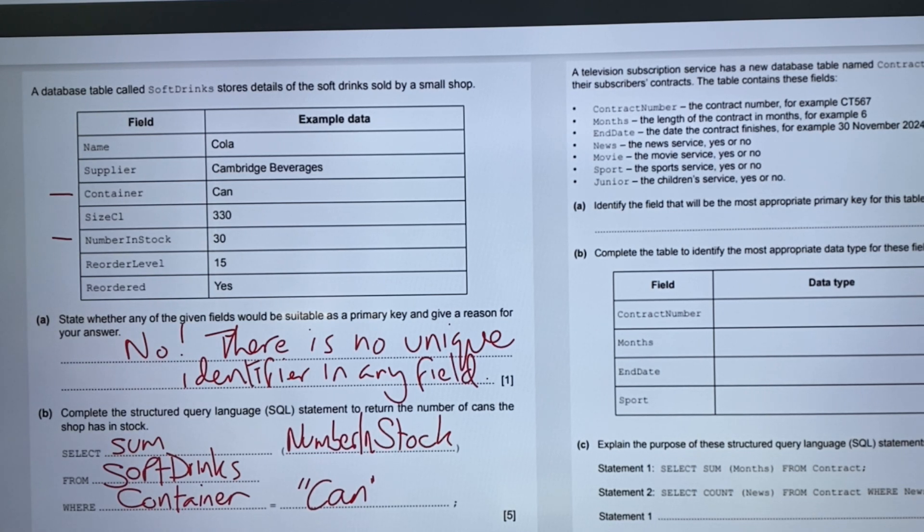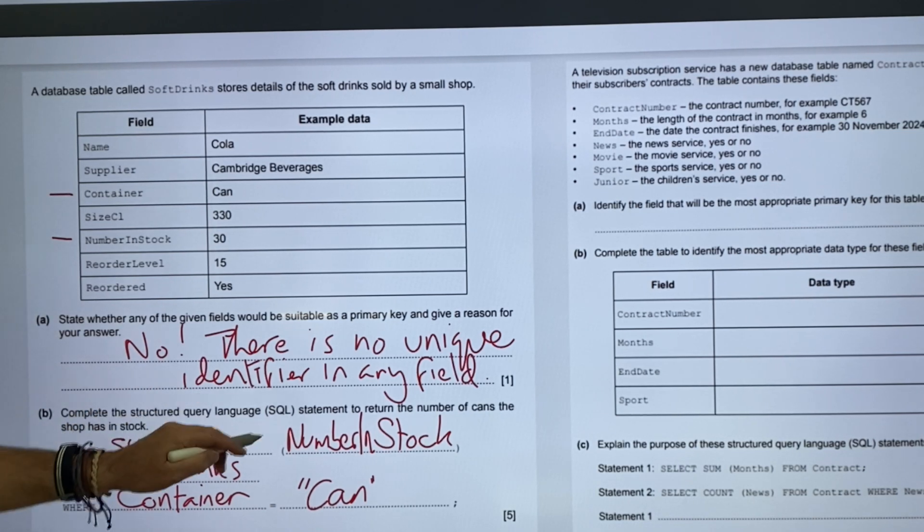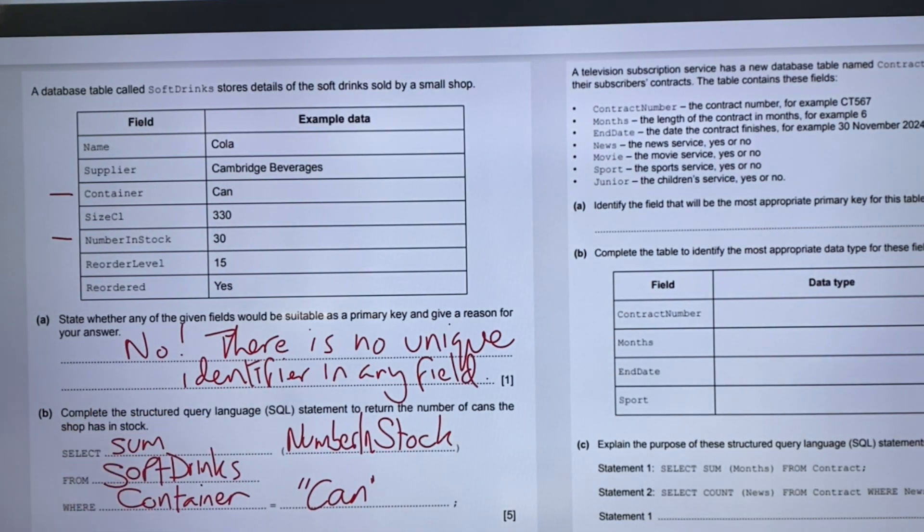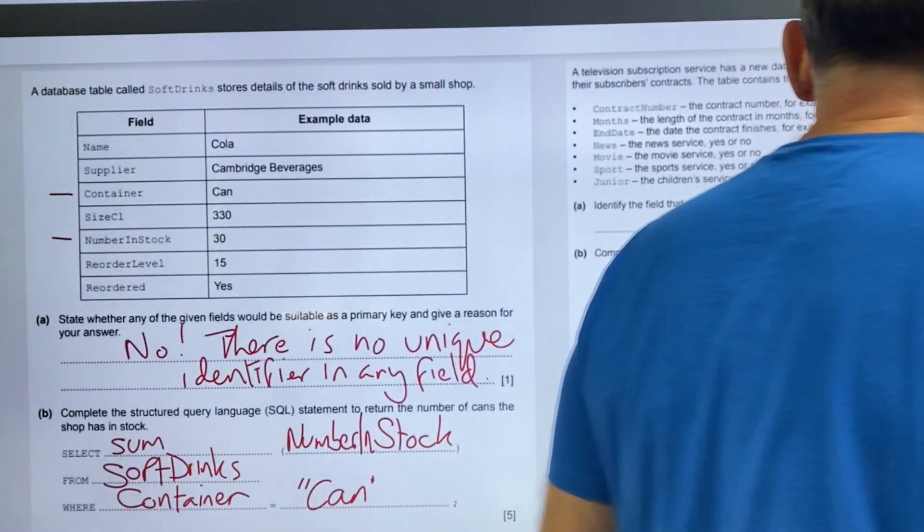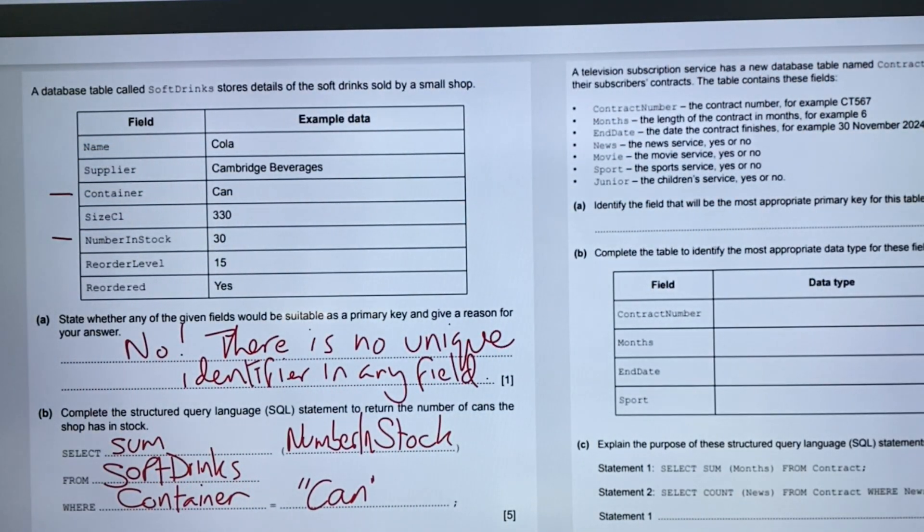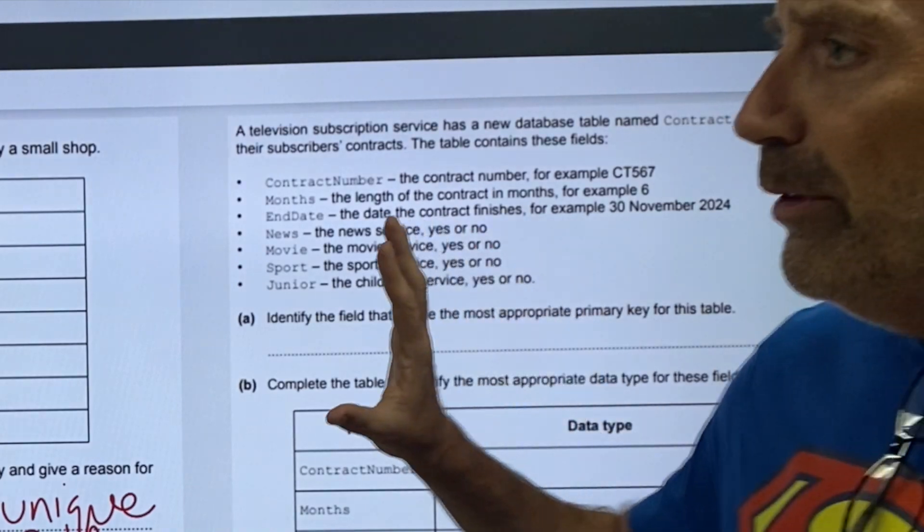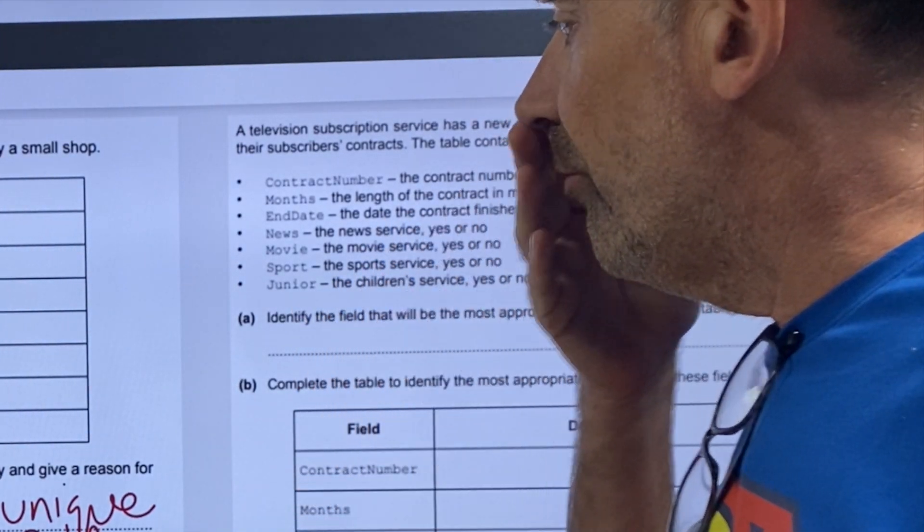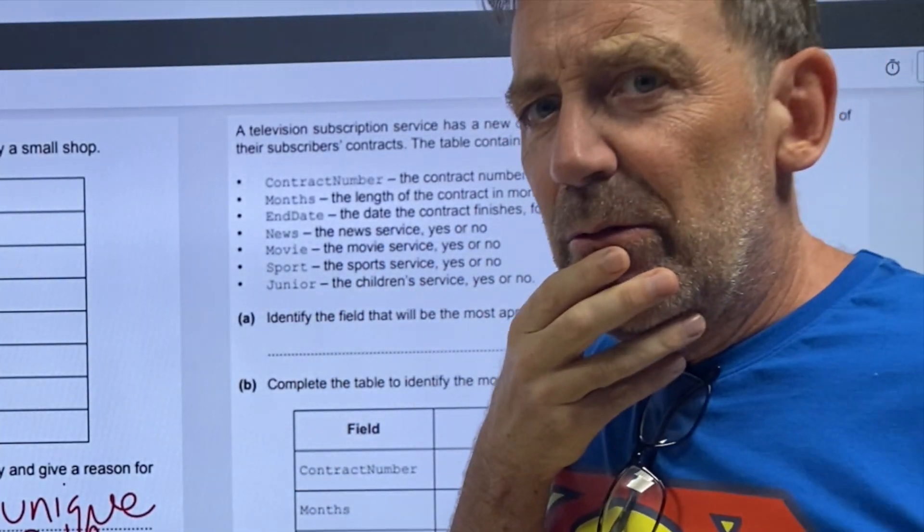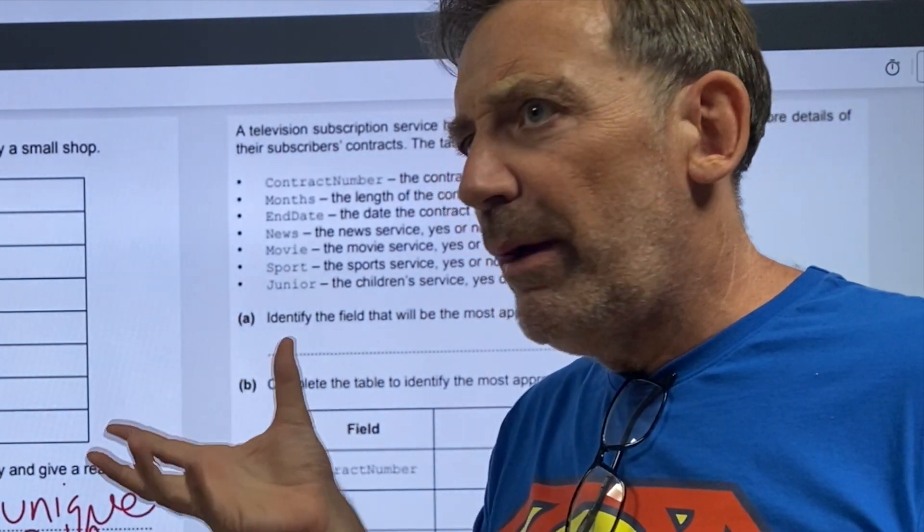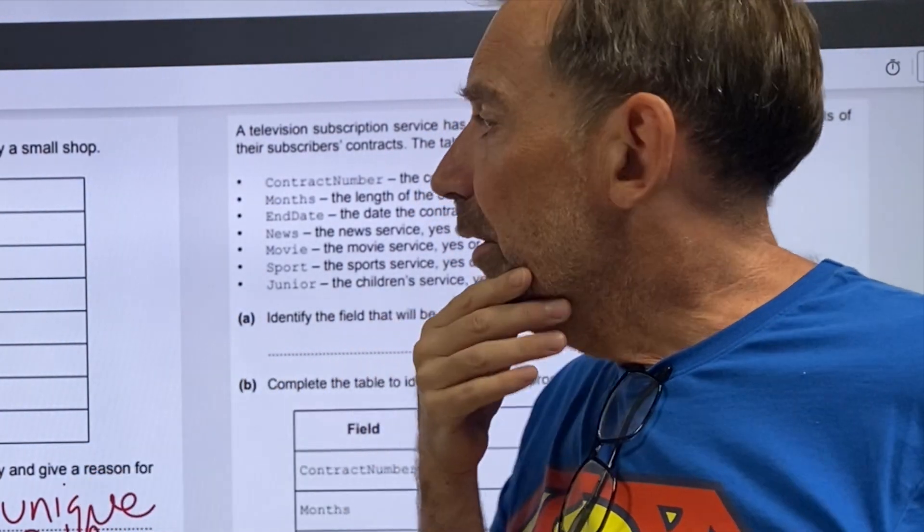That is worth six marks. Obviously, we need to know about sum in terms of SQL. Nice and easy six marks. The next one, and six marks, remember the paper is out of 70. Remember the paper is out of 70, so that's what, about 8%.